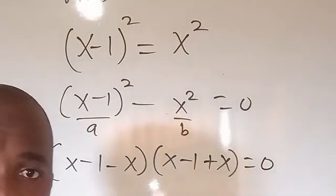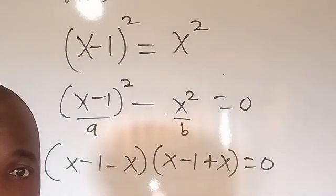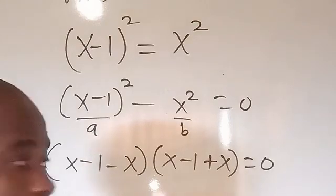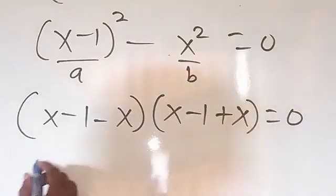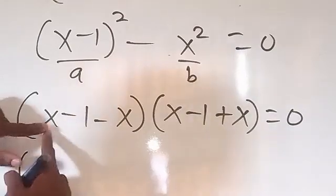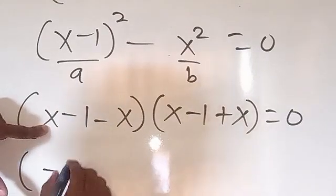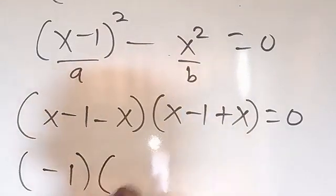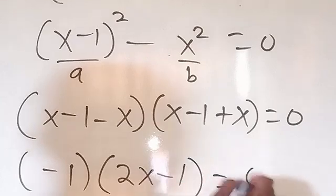So now we have this. So it's to simplify this inside the parentheses before equating the two equations to 0. So we're going to have x minus, we can see x minus x here. So this will give 0. So we're going to have only minus 1 inside these parentheses. And then to the second one, x plus x, we have 2x minus 1 equals 0.